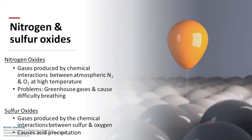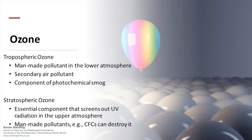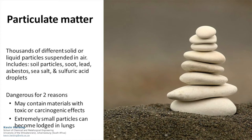Ozone in the troposphere, the lowest level of the atmosphere, is a secondary air pollutant which results in photochemical smog. Ozone in the upper layers of the atmosphere, stratospheric ozone, is an essential component that screens UV radiation and helps protect the planet. However, this ozone can be destroyed by other man-made pollutants.